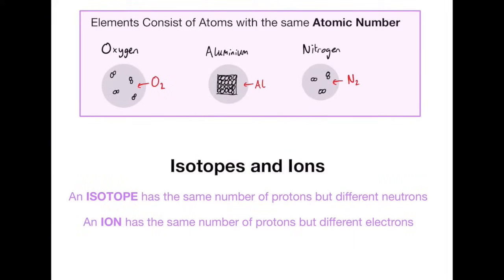Elements consist of atoms with the same atomic number. All that means is oxygen is full of oxygen atoms or oxygen molecules. Gases often travel in pairs, which is why it's O2 and N2 for nitrogen. As you can see, aluminium in a solid form has that rigid structure and there is just lots of the aluminium atoms within it.